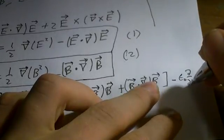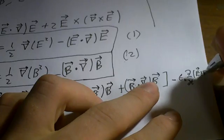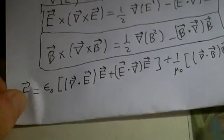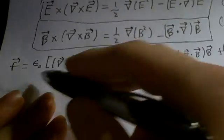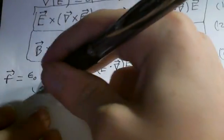We also have a remaining term: minus epsilon-naught times the partial time derivative of E cross B. This is actually a pretty complex equation, but what's useful is we can write the spatial part as a tensor — a tensor has a 3×3 matrix, so it has 9 components. We can write this as T_ij for the different indices i, j, which can be x, y, or z.